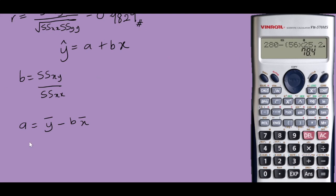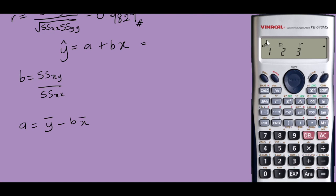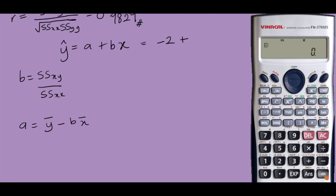You may need to use the formula if the question asks you to do so. To find the values of a and b directly from the calculator, choose Shift 2, then move to the right-hand side. This shows the value of a, which is negative 2, and then press Shift 2 again — b is equal to 0.7.